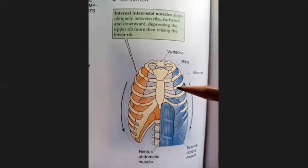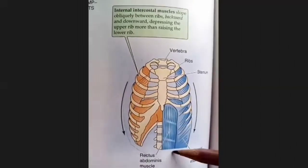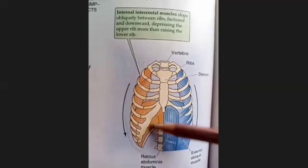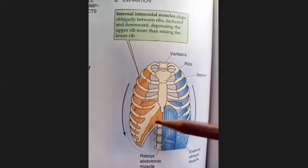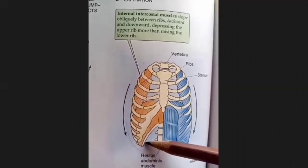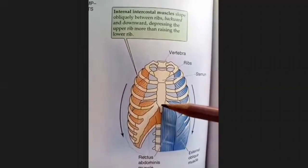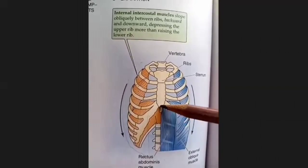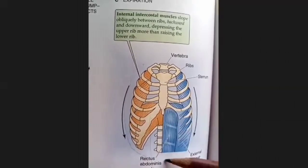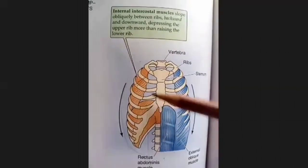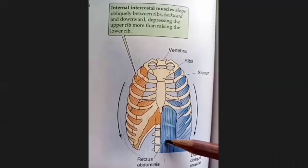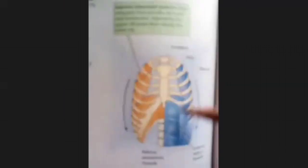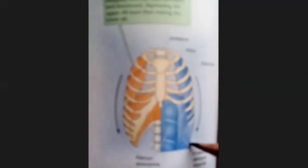At the same time we have the rectus abdominus muscles — there are two of them, one on each side, and together they create the six-pack appearance. They are attached to the sternum and the ribs, and they will pull the ribs down, which will also decrease the size of the chest. Helping them are the external oblique muscles, which were not mentioned yesterday.